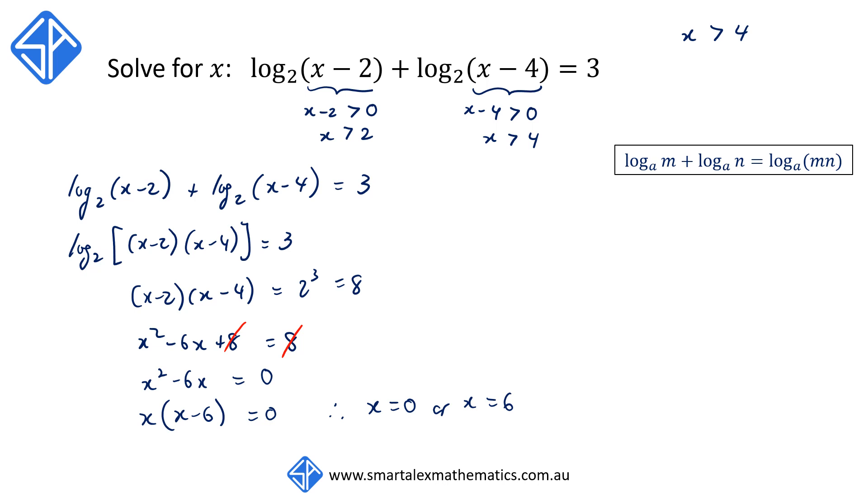Now, let's observe the domain that we started off with. x needs to be greater than 4. So this means that x is equal to 0 needs to be rejected. And so x is equal to 6 is the only solution.